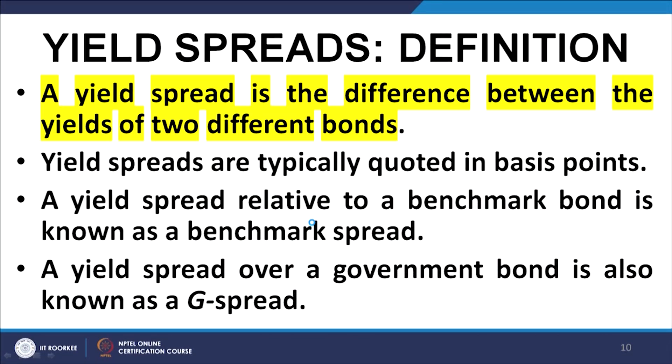Then we talked about yield spreads. Yield spreads are represented as the difference between the yields of two different bonds. Commonly, one of the bonds constitutes the benchmark — it may be a triple-A rated bond or a government bond — and we evaluate the yield spread of a given bond of a given credit rating. A yield spread where the benchmark yield is the government bond yield is called the G-spread.